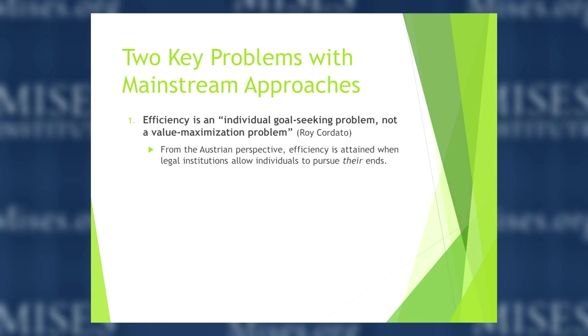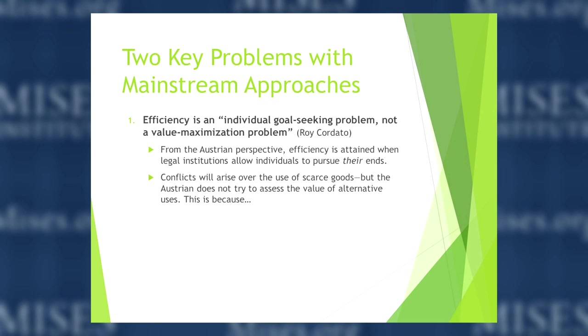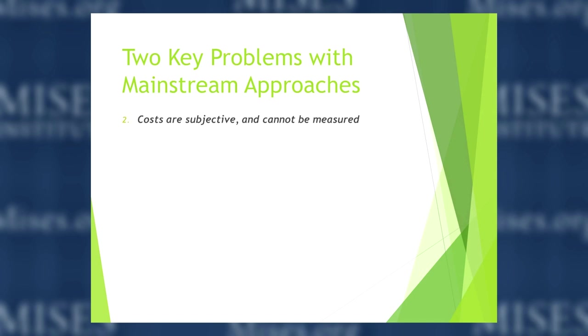Rory Cardato points out that efficiency, if we're trying to get an efficient outcome, is fundamentally an individual goal-seeking problem. If you free individuals up to seek their own goals, that's what produces an efficient outcome. We can't simply aggregate the well-beings of all different individuals and total up their goals to reach a conclusion about what the optimal amount of fireworks or paper production might be — there's really no way to do this. From the Austrian perspective, efficiency is attained when legal institutions allow individuals to pursue their individual ends. We do see conflicts that arise over the use of scarce goods, but the Austrian economist does not try to assess the value of those alternative uses because costs are subjective and cannot be measured.